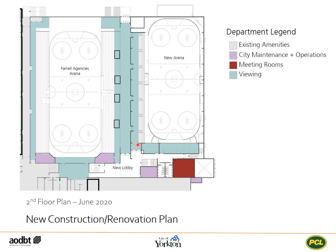Club seating will be introduced, where possible, on the east side above the current seats. Viewing areas will be developed on the south side of each arena. The viewing area of the new arena will be fully enclosed and include a children's play area. While the back 40 space of the Farrell Agencies arena will move from the northeast corner to the south side of the rink, and take advantage of the current lounge seating area.